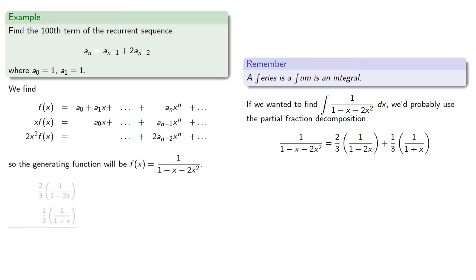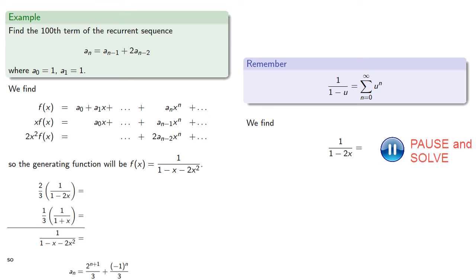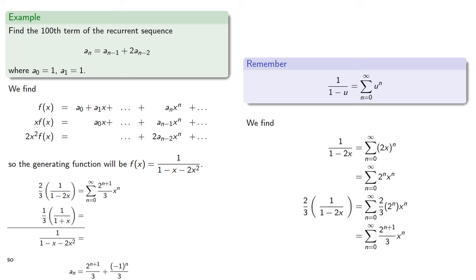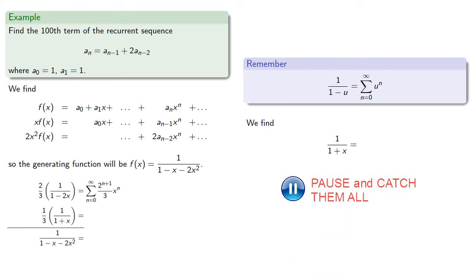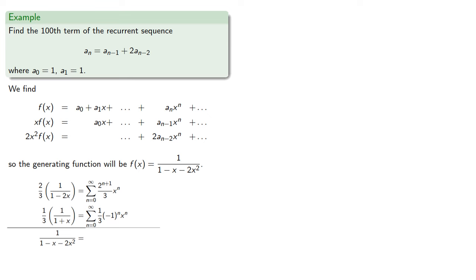So if we add these two expressions, we get our generating function. We know the series expansion for a function of the form 1 over 1-u, and so we find the corresponding series. We can add them term-wise.